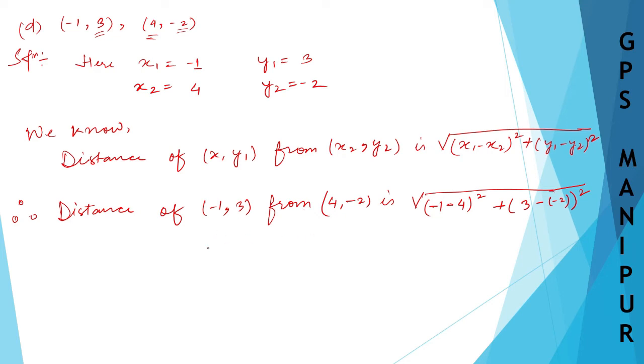So, let me write down here: -1 minus 4, it is -5 whole square, plus 3 minus into minus plus 3 plus 2, 5, and square.